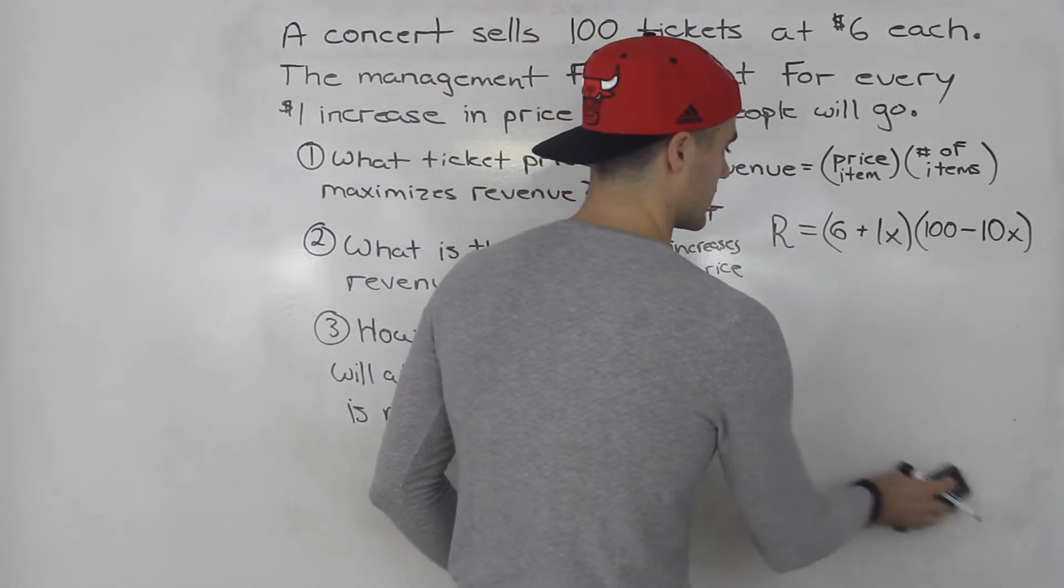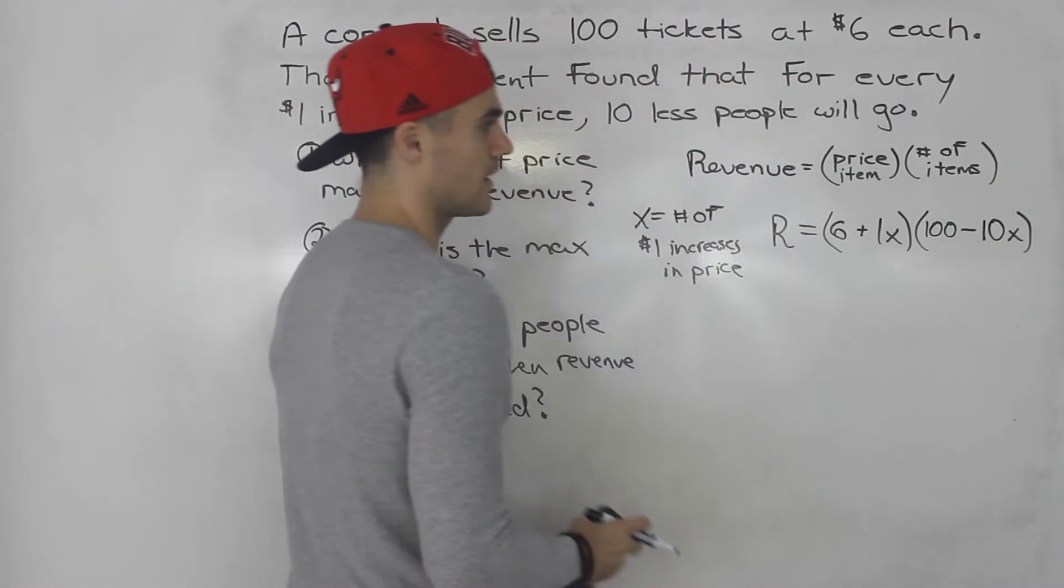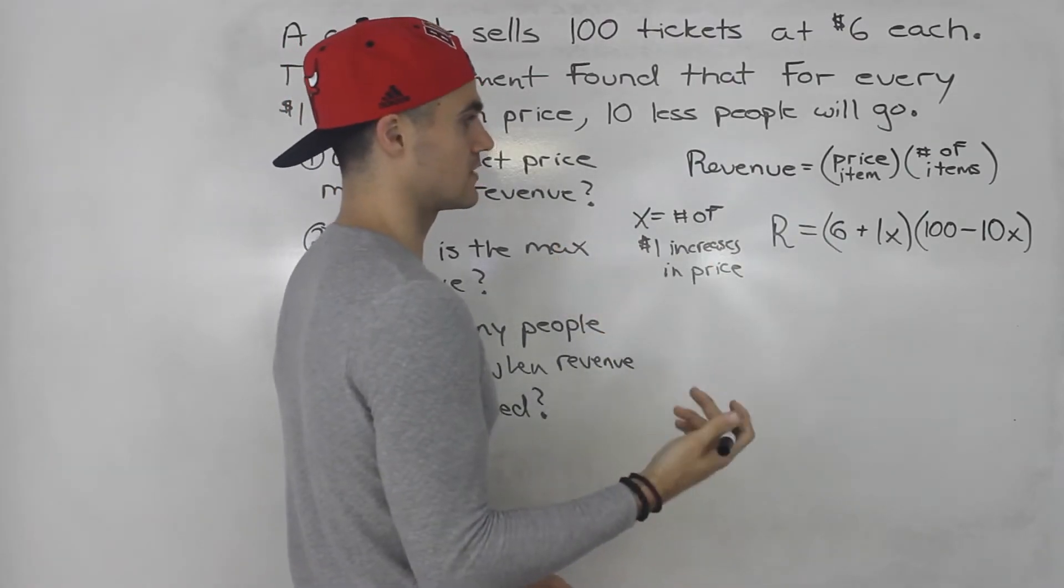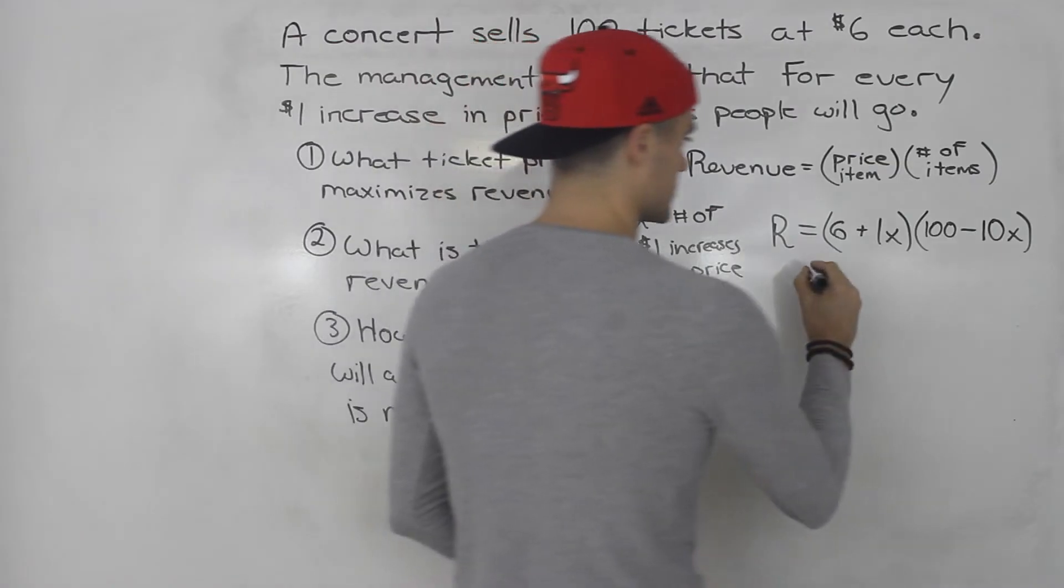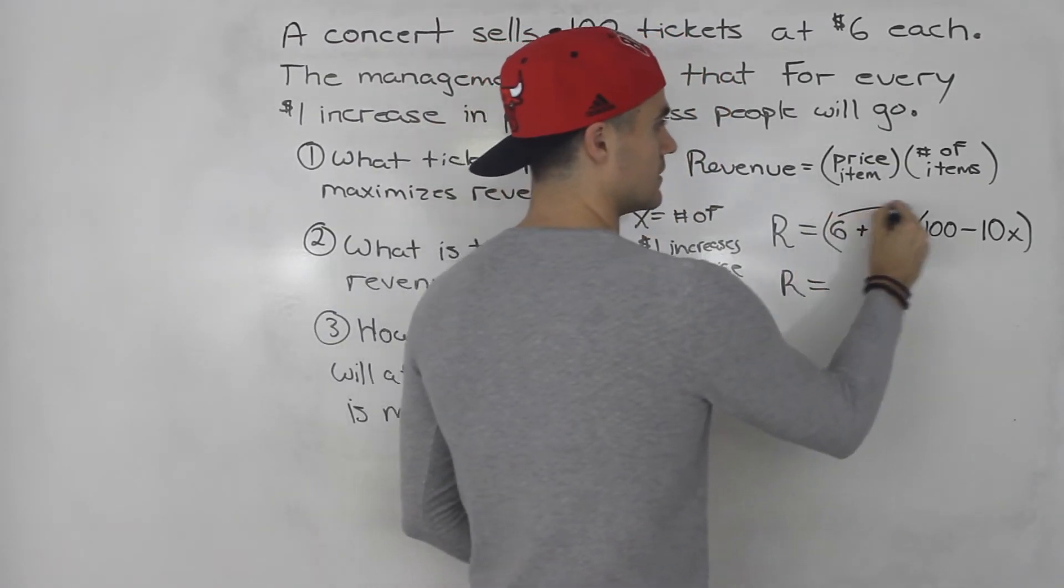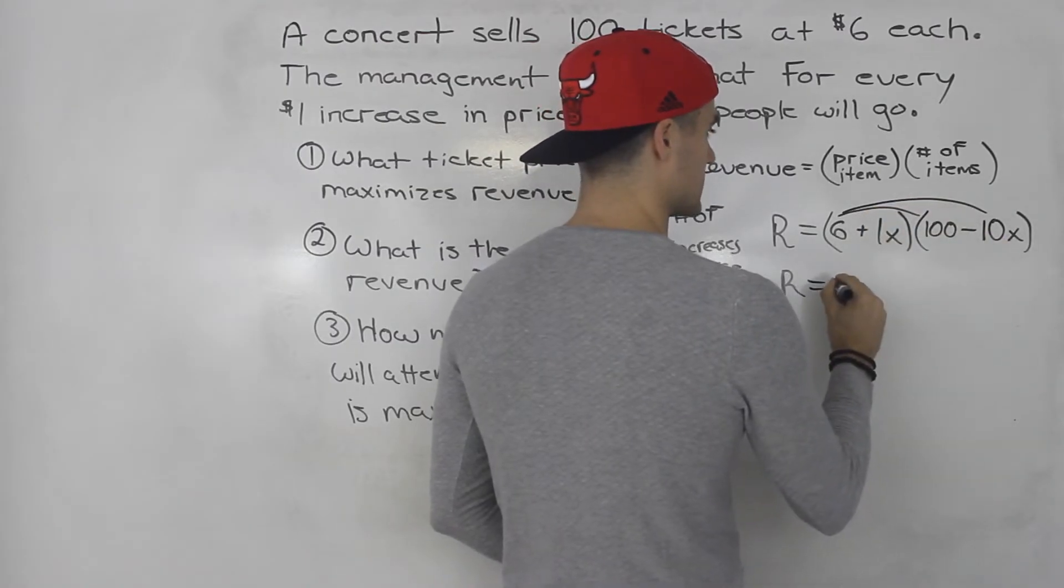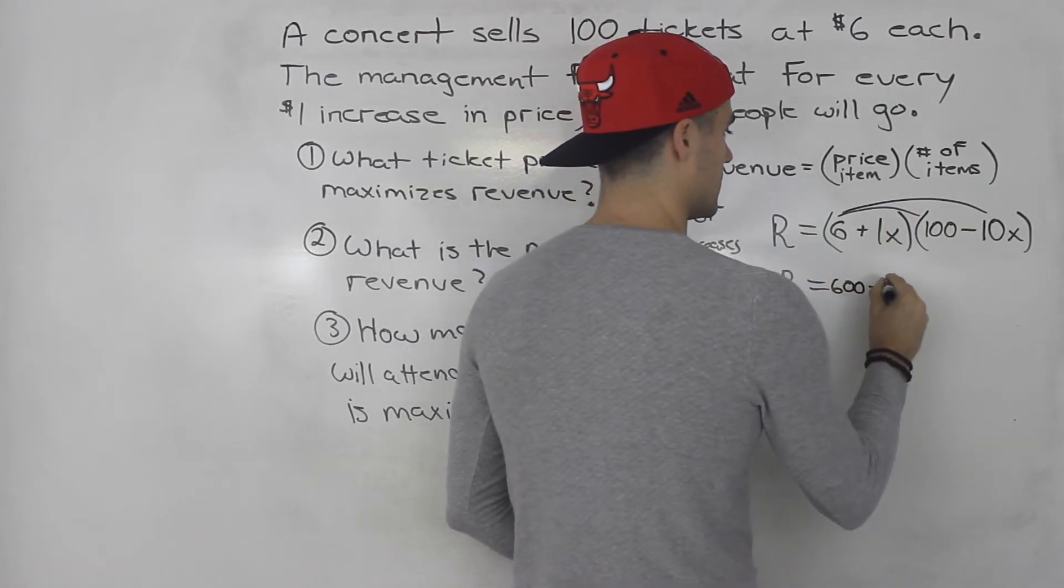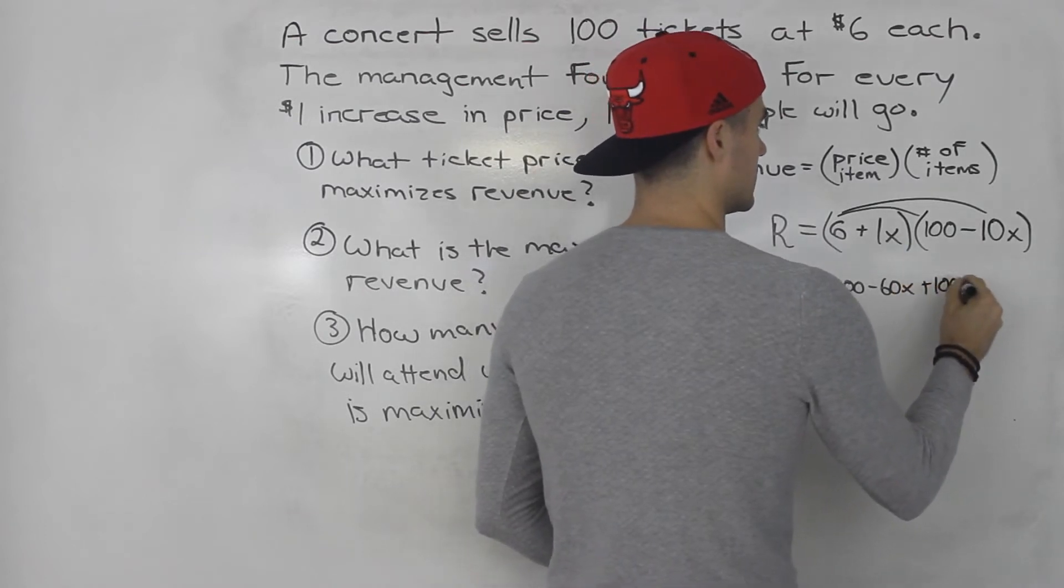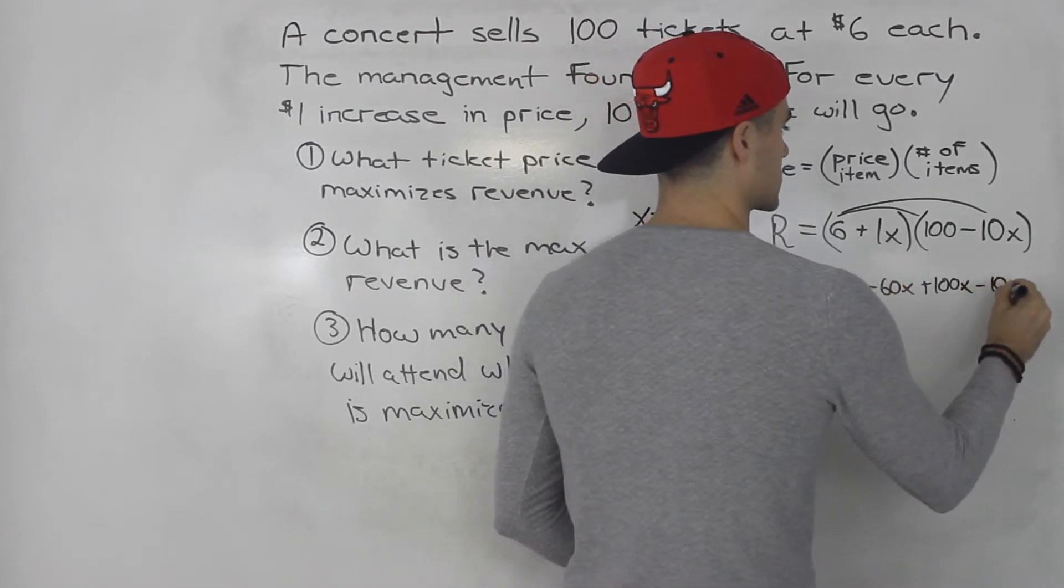What is another way? Another way is you can expand everything and then complete the square, and we should get the same answer. If we take this revenue function and expand it, 6 times 100, 6 times negative 10x, that'd be 600 minus 60x, plus 100x, minus 10x squared.